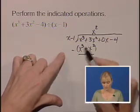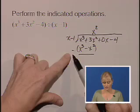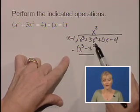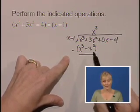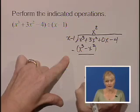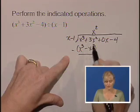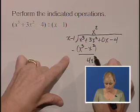Now we're going to add or subtract straight down. x cubed minus x cubed, that term is gone. 3x squared minus a minus x squared, that becomes a plus. So we'll have 3x squared plus x squared, which is 4x squared.